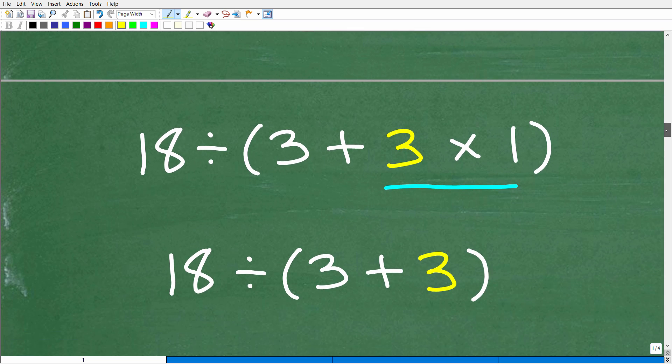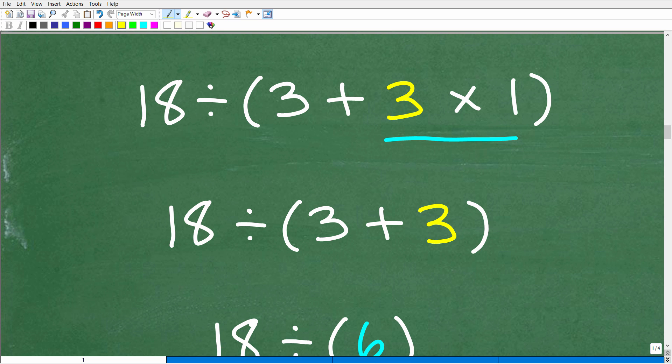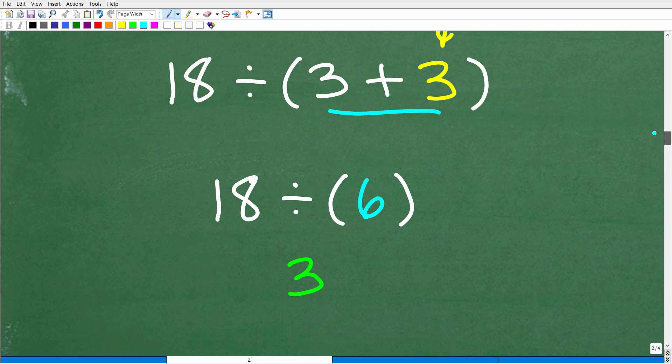Back to the problem. We have 18 divided by parentheses 3 plus 3 times 1. We're still in the parentheses part of the order of operations PEMDAS. We're just focused here. We're not even thinking about the 18 yet. 3 times 1, of course, is 3. So we have 18 divided by parentheses 3 plus 3. We're not done working inside the parentheses yet. 3 plus 3, of course, is 6. So finally, we have 18 divided by 6, which, of course, is 3.